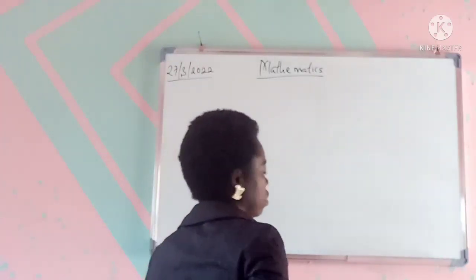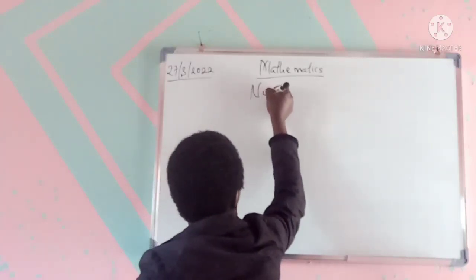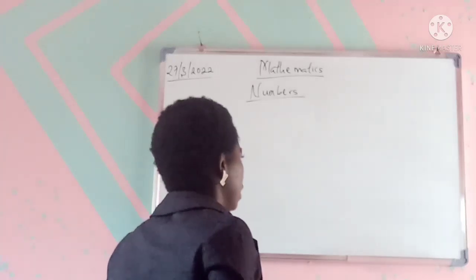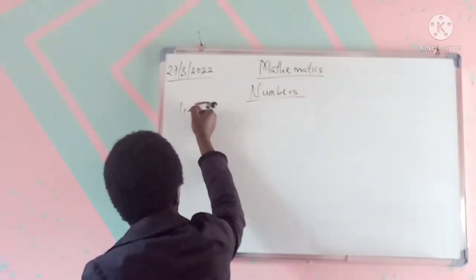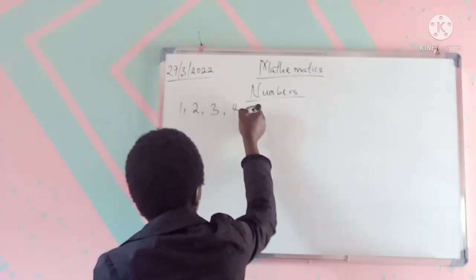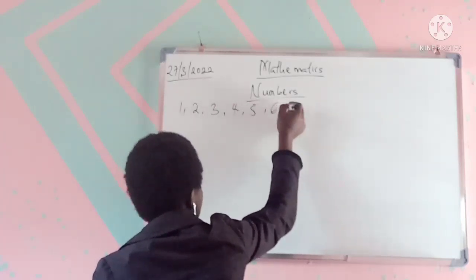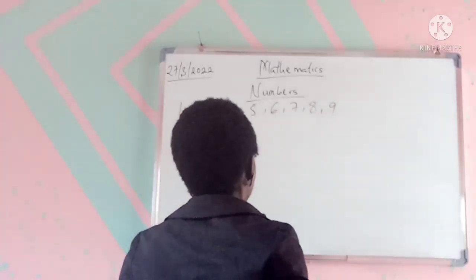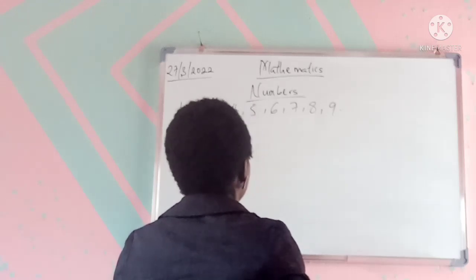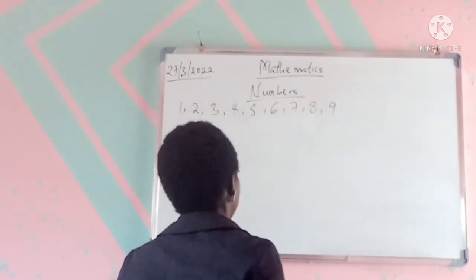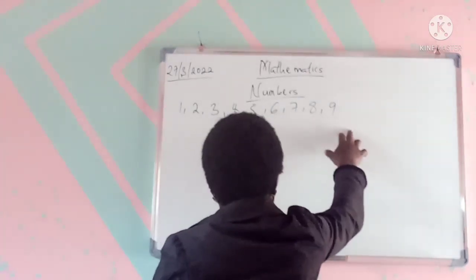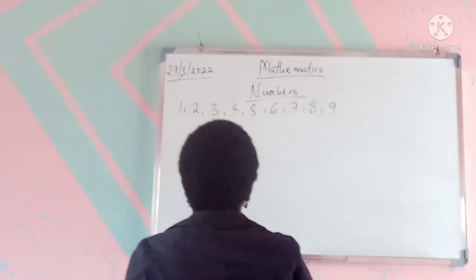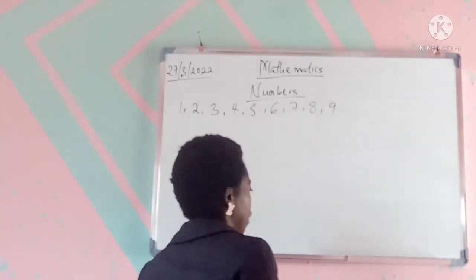So we are looking at numbers. When a person writes, for example, the numerals one, two, three, four, five, six, seven, eight, nine — I'm going to stop here because we are restricting ourselves to the ones. In numbers, these first nine numerals are the ones. They are the numbers you'll find in every number written; they are the numbers you'll find in the ones place.